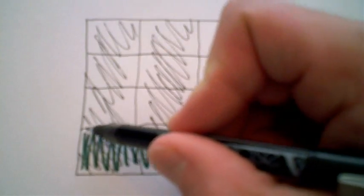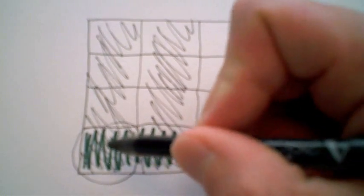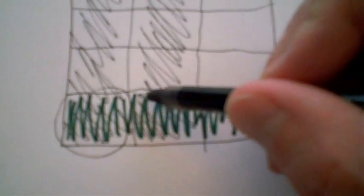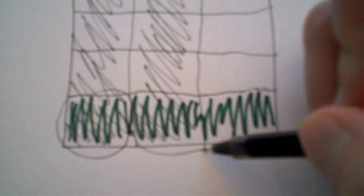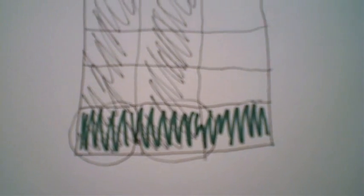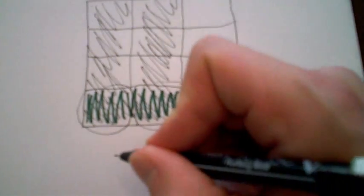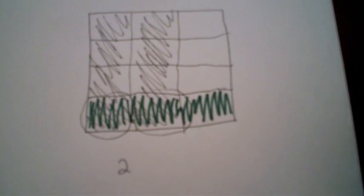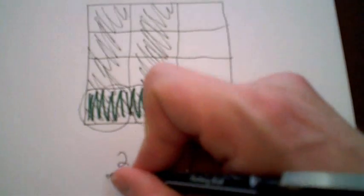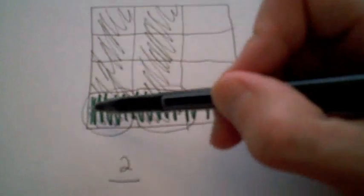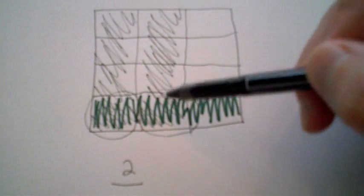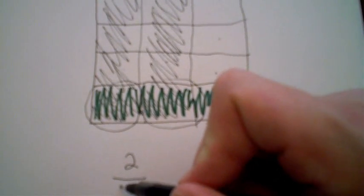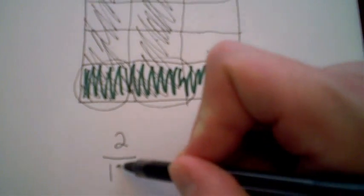So in this case you can see this section has both black and green shading, and this section also has black and green shading. So I have a total of two sections that are shaded in both black and green, out of a total of 1, 2, 3, 4, 5, 6, 7, 8, 9, 10, 11, 12 — so out of a total of twelve sections.